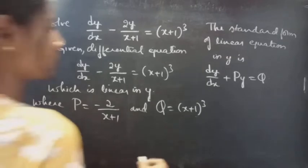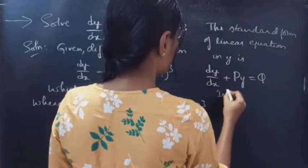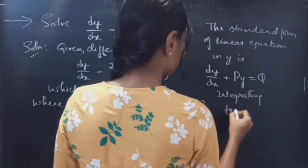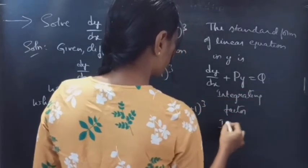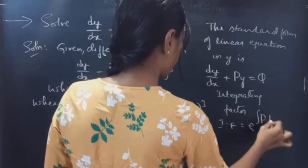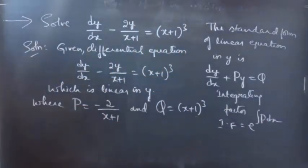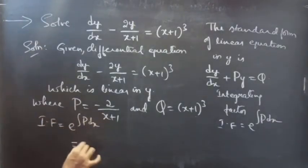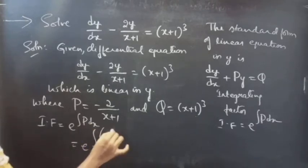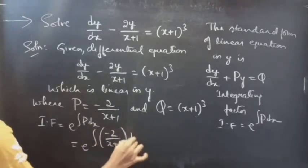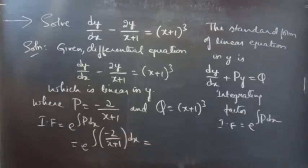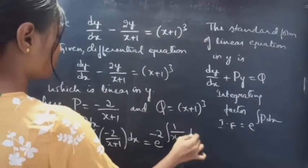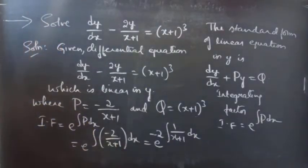Now we need to find the integrating factor. The integrating factor of a linear equation in y is given by IF = e^(∫P dx). So IF = e^(∫ minus 2/(x+1) dx), which equals e^(minus 2 · ∫ 1/(x+1) dx).